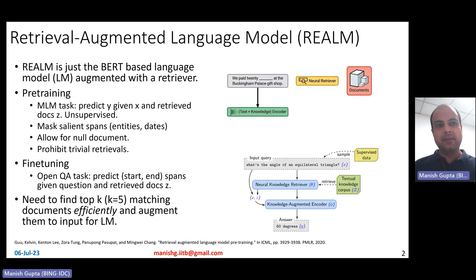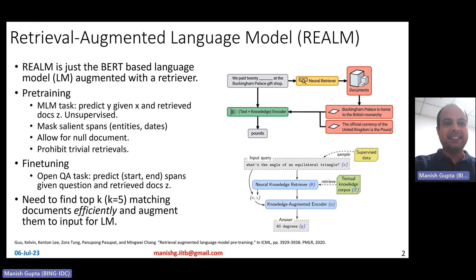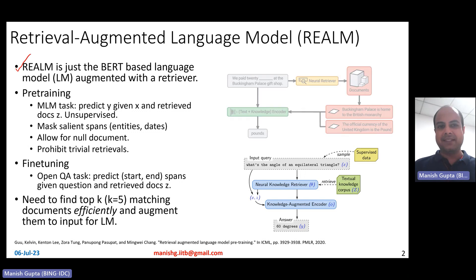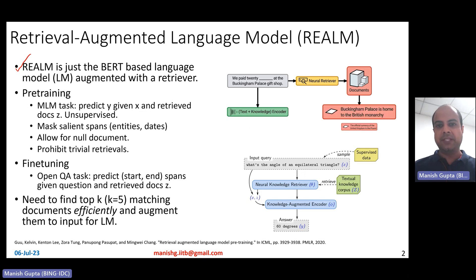REALM stands for Retrieval Augmented Language Model. It basically says it's a language model, so REALM is basically just a word-based language model. It's just that it's augmented with a retriever. So let's understand what this means.